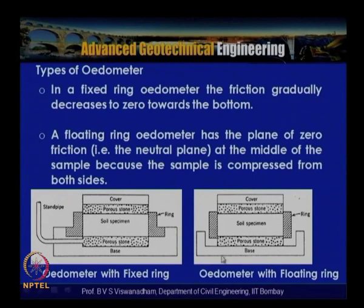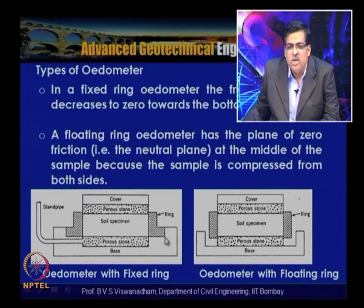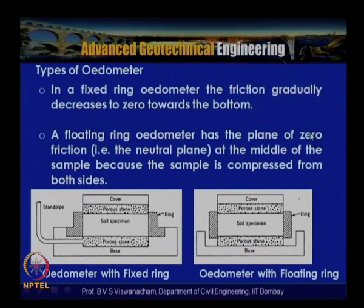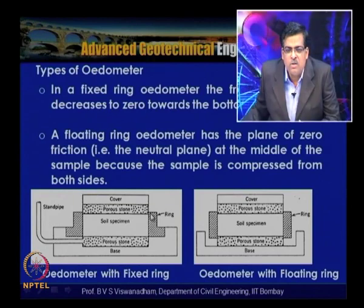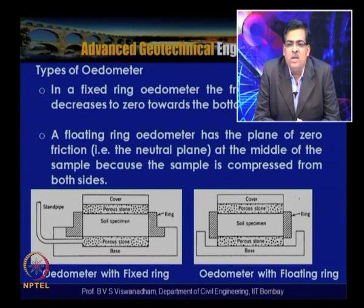In the fixed ring oedometer, the ring is fixed rigidly to the base plate, and friction gradually decreases from maximum at the top to zero toward the bottom of the specimen. In the floating ring oedometer, there is no connection between the base plate and the floating ring, so the sample is compressed from both sides and the plane of zero friction (neutral plane) is at the middle of the sample.